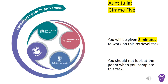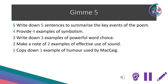The first task we're going to complete is called Gimme Five and it's a retrieval task. You're going to be given eight minutes to complete this and you should not look at the poem. Write down five sentences to summarise the key events within the poem. Provide four examples of symbolism. Write down three examples of powerful word choice. Make a note of two examples of effective use of sound. Copy down one example of humour used by McCaig.